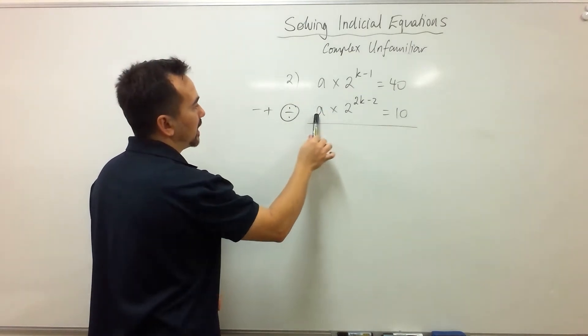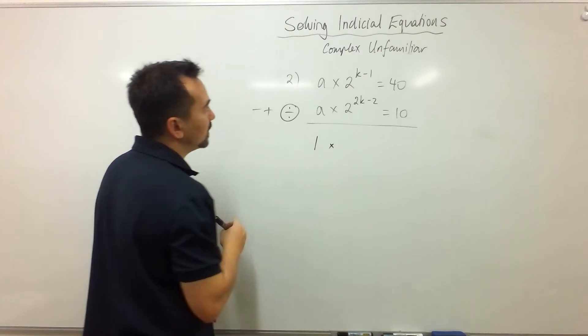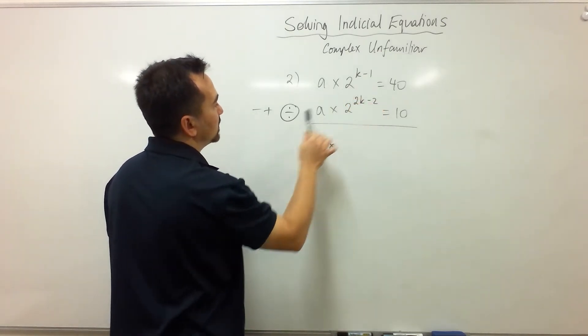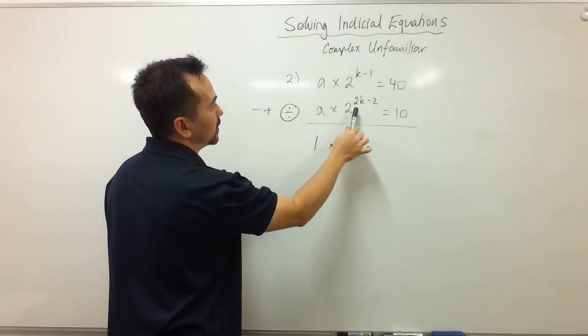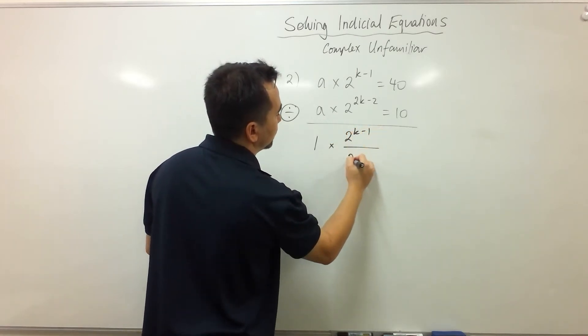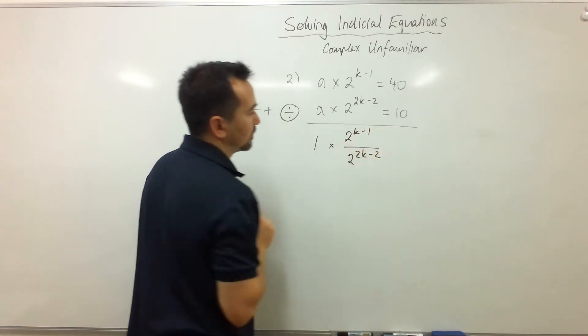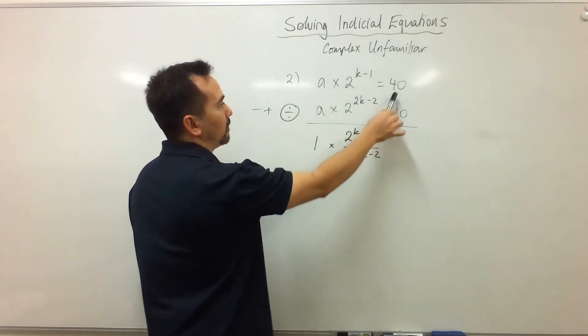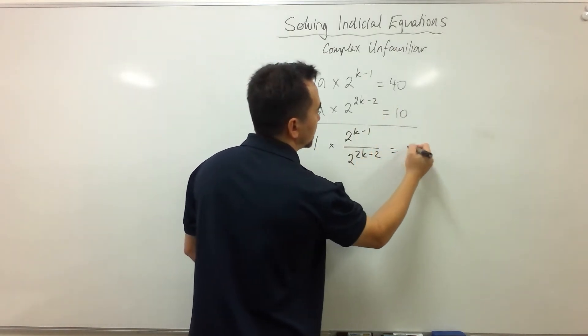So a divided by a is just 1. 2 to the power of k take 1 divided by 2 to the power of 2k take 2 looks like this. Okay, and then we have 40 divided by 10 which is just 4.